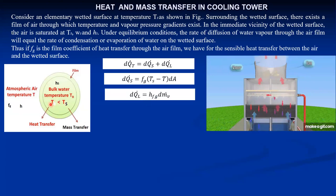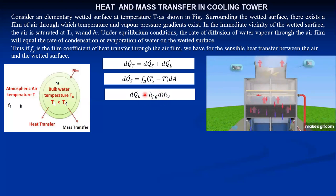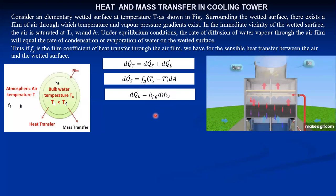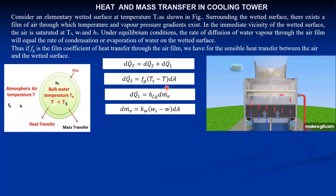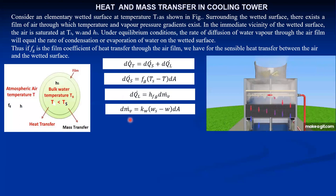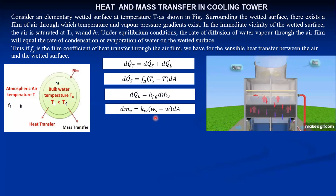Latent heat is also transferred because air takes away some water vapor. That latent heat is calculated by the enthalpy of evaporation HFG multiplied by the mass flow rate of water vapor. The rate at which water evaporates is calculated using the mass diffusion equation. Similar to sensible heat transfer, the mass evaporated is given by Kw × (Ws − W) × DA. This quantity (Ws − W) is the driving force for generating the mass flow rate of vapor, where Ws is the specific humidity corresponding to saturated air and W is the specific humidity of unsaturated air.